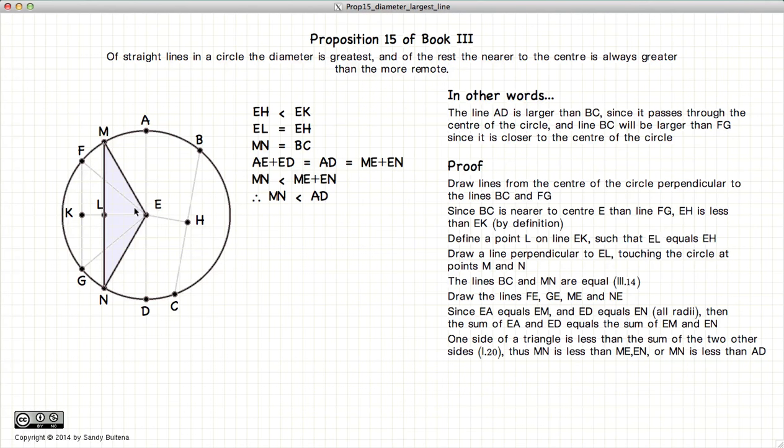If we look at this triangle, we have that ME plus EN must be larger than MN, since the sum of two sides of any triangle is larger than the third, according to Proposition 20 of Book 1. So ME plus EN is greater than MN.